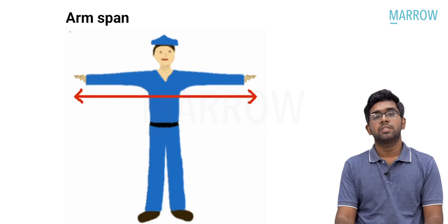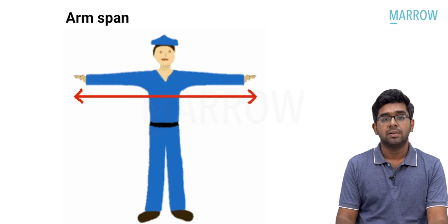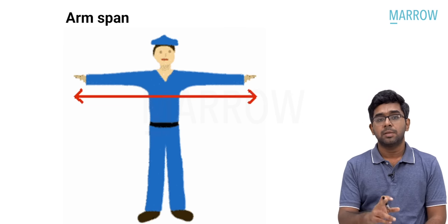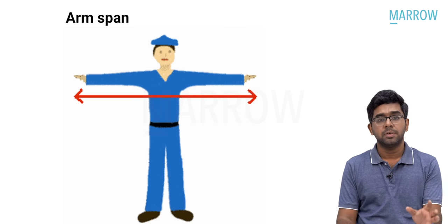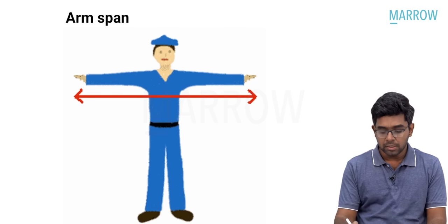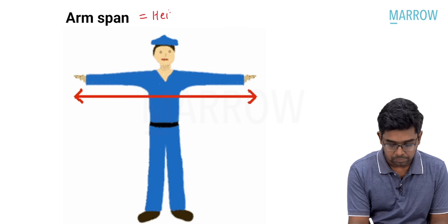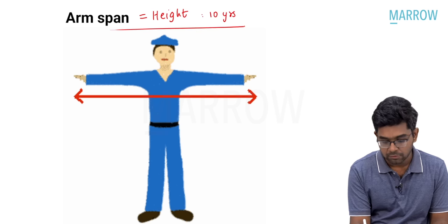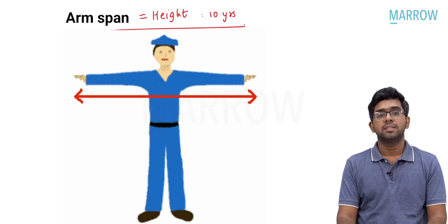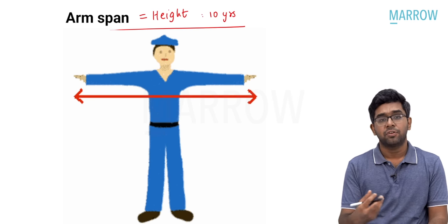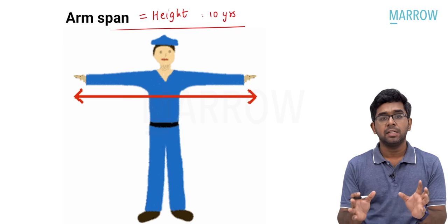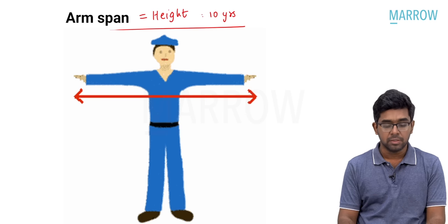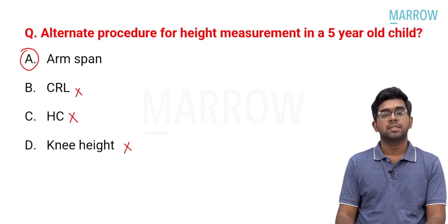Arm span is measured by outstretching the hands and measuring the distance between the tips of the fingers. Arm span is almost equivalent to height measurement. Arm span equals height exactly at the age of 10 years. Before 10 years it is 1 to 2 centimeters less, and for ages after 10 years it is 1 to 2 centimeters more. It is approximately equal to height measurement, so the best answer is arm span.